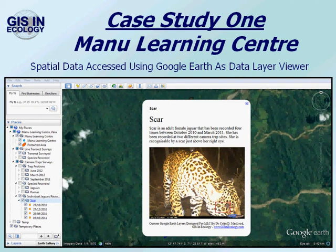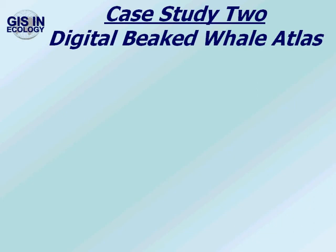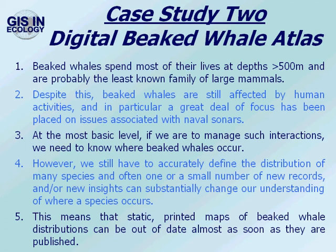That's an example for the Manu Learning Centre, which covers a relatively small area. Next we're going to move on to another example that covers a much wider area — in this case the entire globe. This is the digital beaked whale atlas. Beaked whales spend most of their lives at depths greater than 500 metres and are probably the least known family of large mammals. Despite this, beaked whales are still affected by human activities, and in particular a great deal of focus has been placed on issues associated with naval sonars, which are known to cause mass strandings.